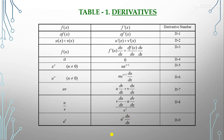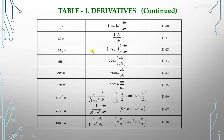For a^u: d/dx(a^u) = a^u·ln(a)·du/dx. For ln(u): d/dx(ln u) = (1/u)·du/dx. For log base a of u: d/dx(log_a u) = (log_e a)·(1/u)·du/dx.